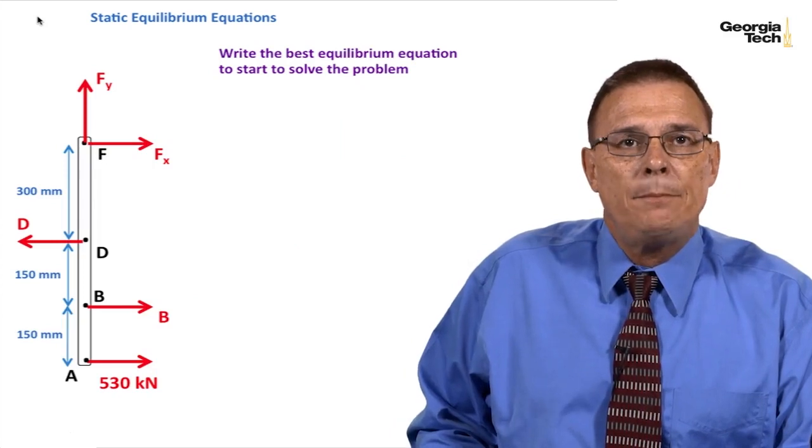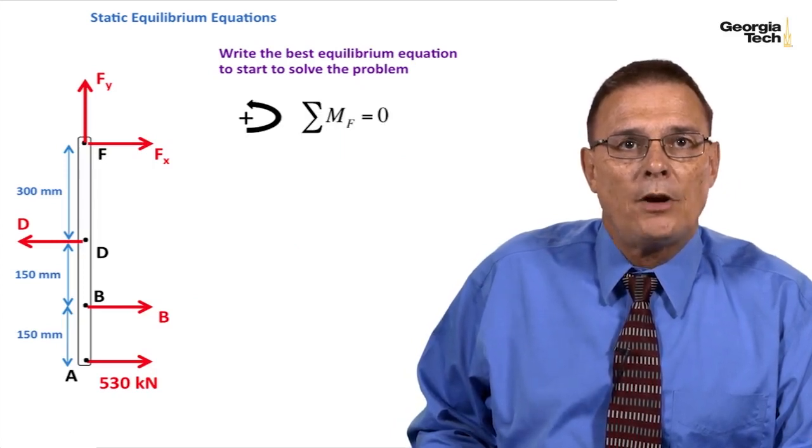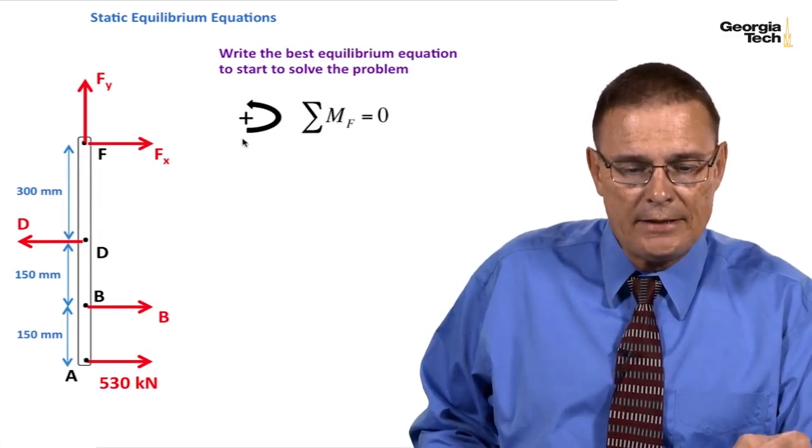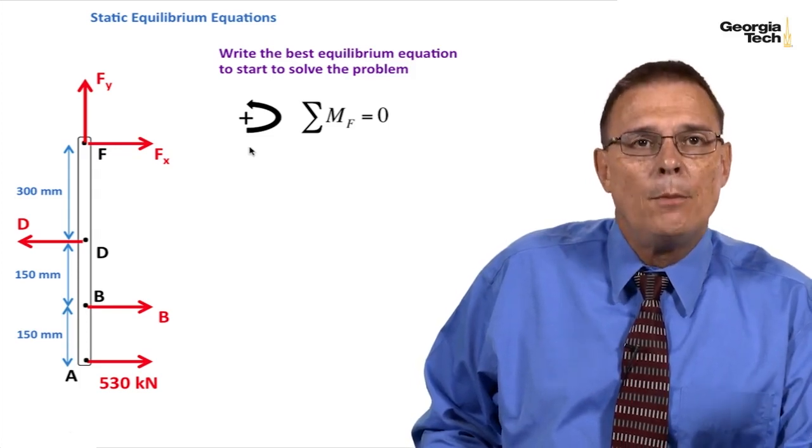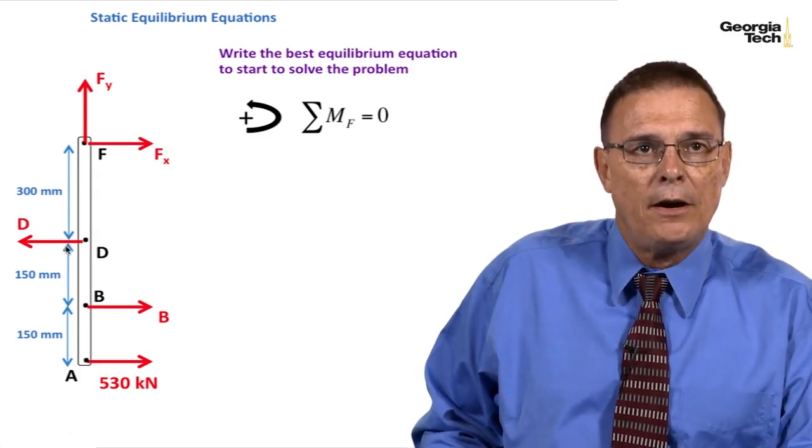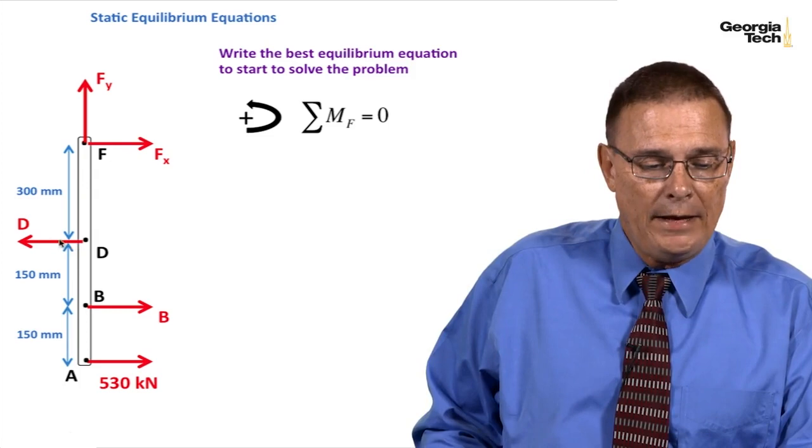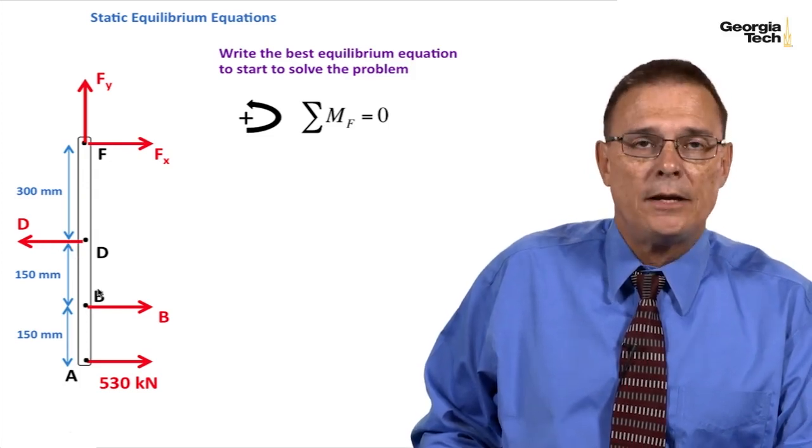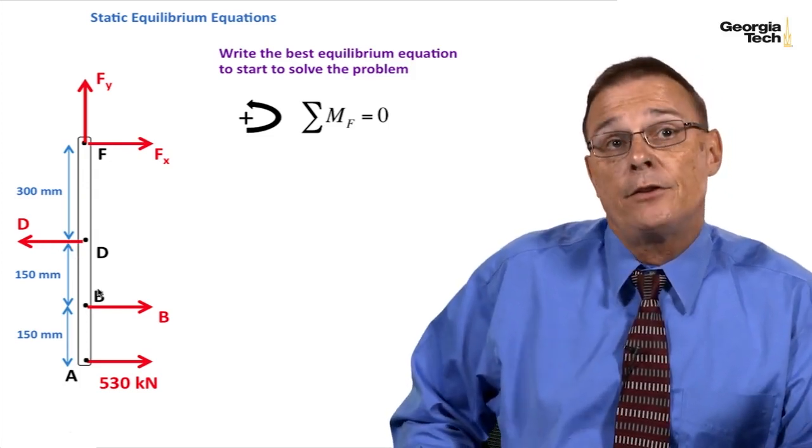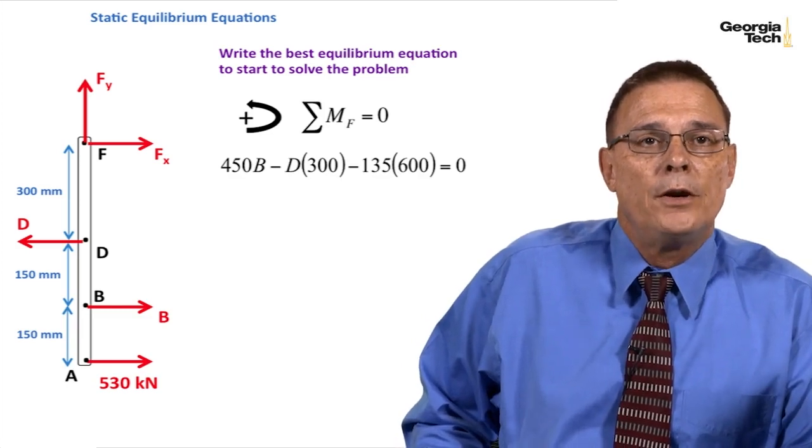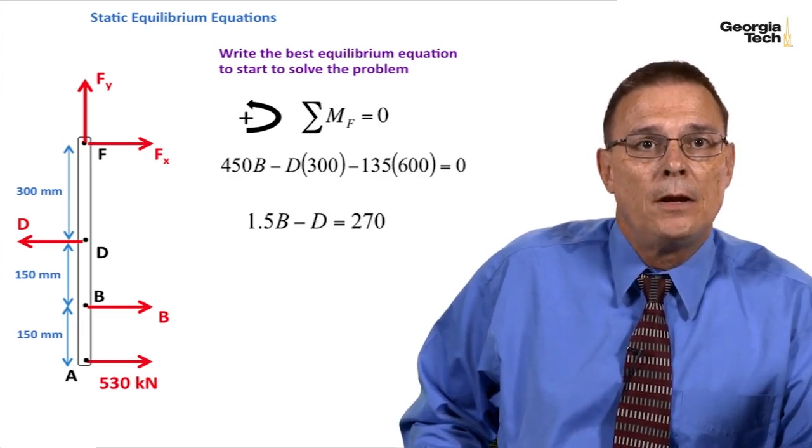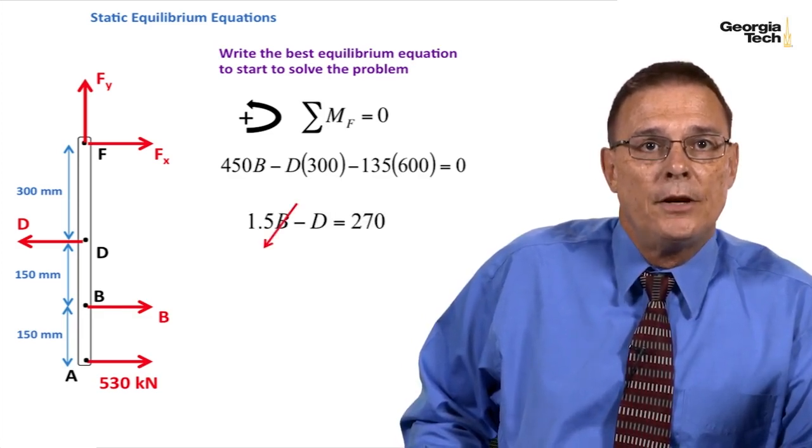Go ahead and write the best equilibrium equation to start to solve the problem. That's summing the moments about F because that allows us to find the axial stresses in B and D. We're not interested in the reaction forces at F at this point in this problem. Here is my equilibrium equation, and it boils down to this.